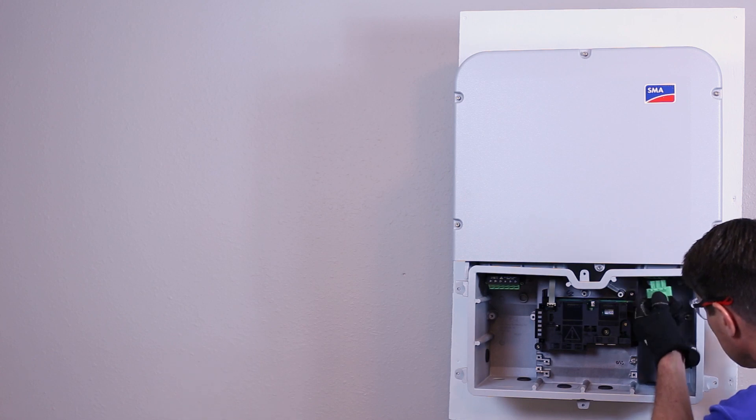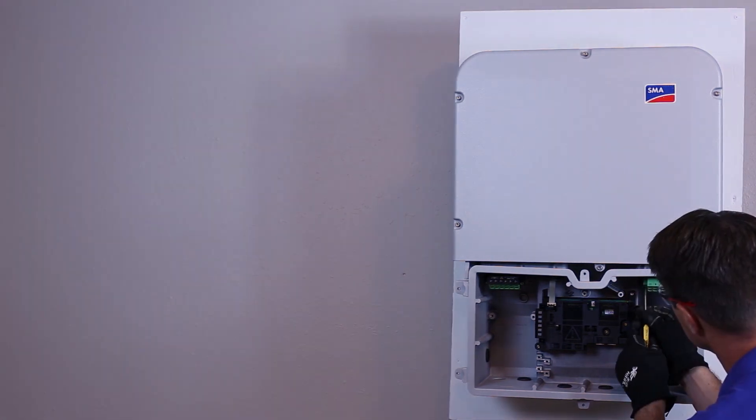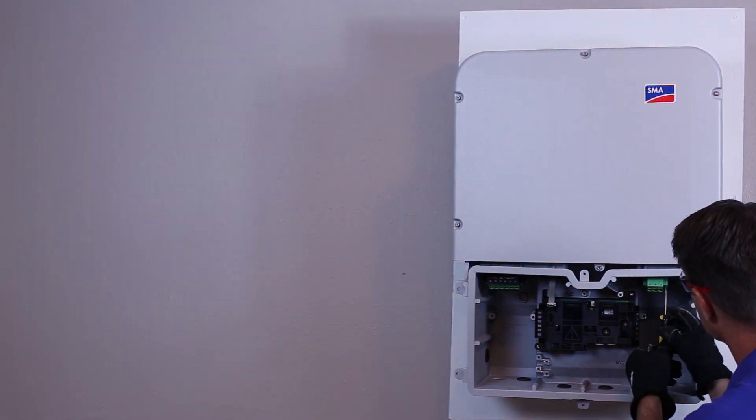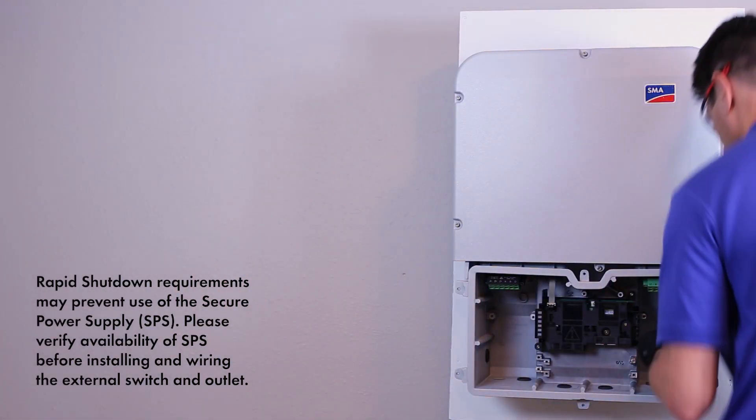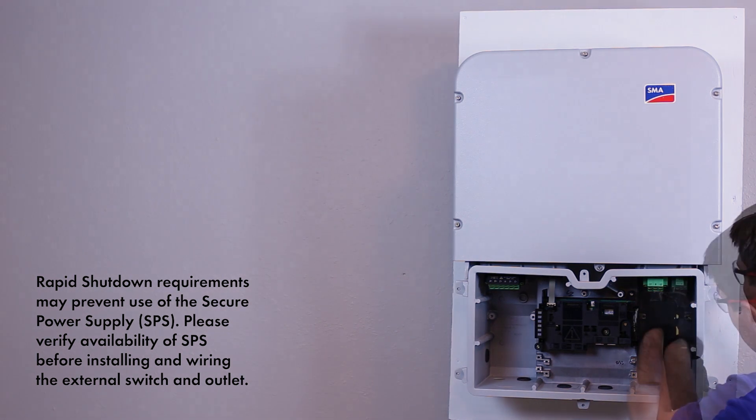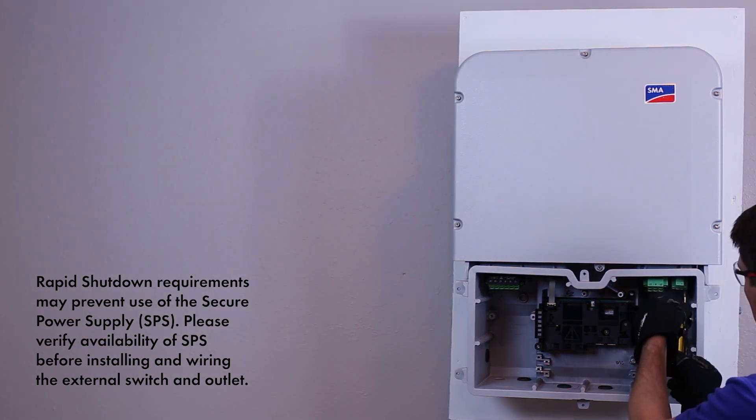The AC plug has three openings for line one, line two, and neutral. Mount the plug and tighten on both sides with a 5/32 inch standard screwdriver. The outlet plug for the secure power supply has two openings for the line and neutral conductors. Mount the plug and tighten on both sides with a 5/32 inch standard screwdriver.